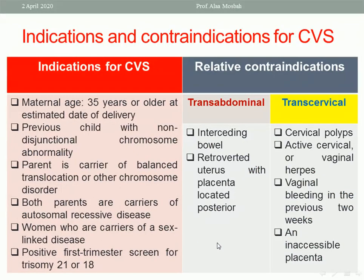The indications of chorionic villus sampling include: a previously affected child with non-disjunctional chromosomal abnormality; maternal age above 35 years; a parent who is a carrier of balanced translocation or other chromosomal disorder; women who are carriers of sex-linked disease; any positive first trimester screen for trisomy 21 or 18; and both parents being carriers of an autosomal recessive disease.